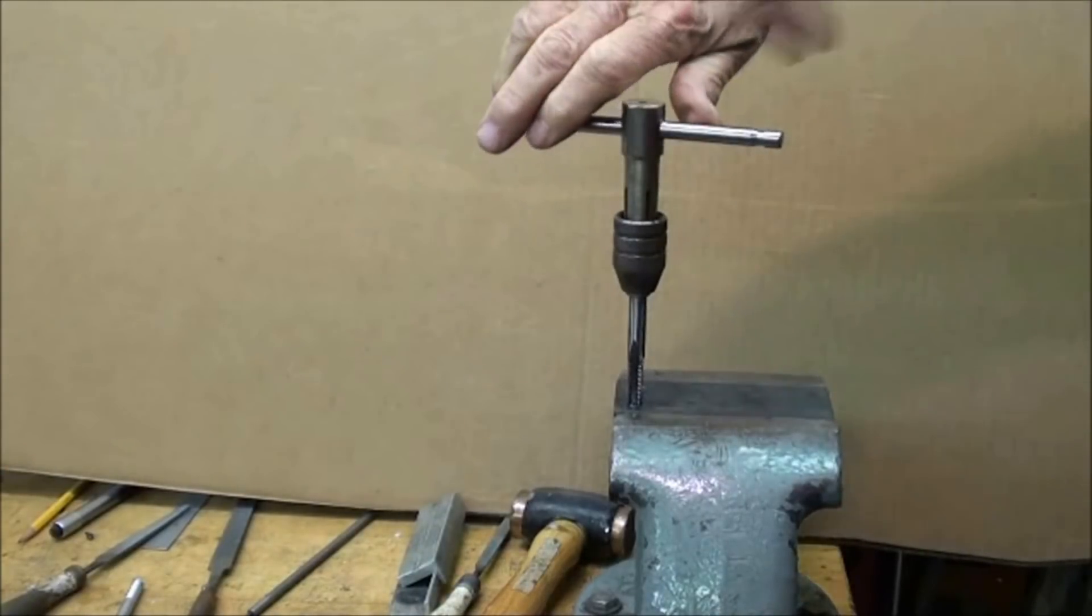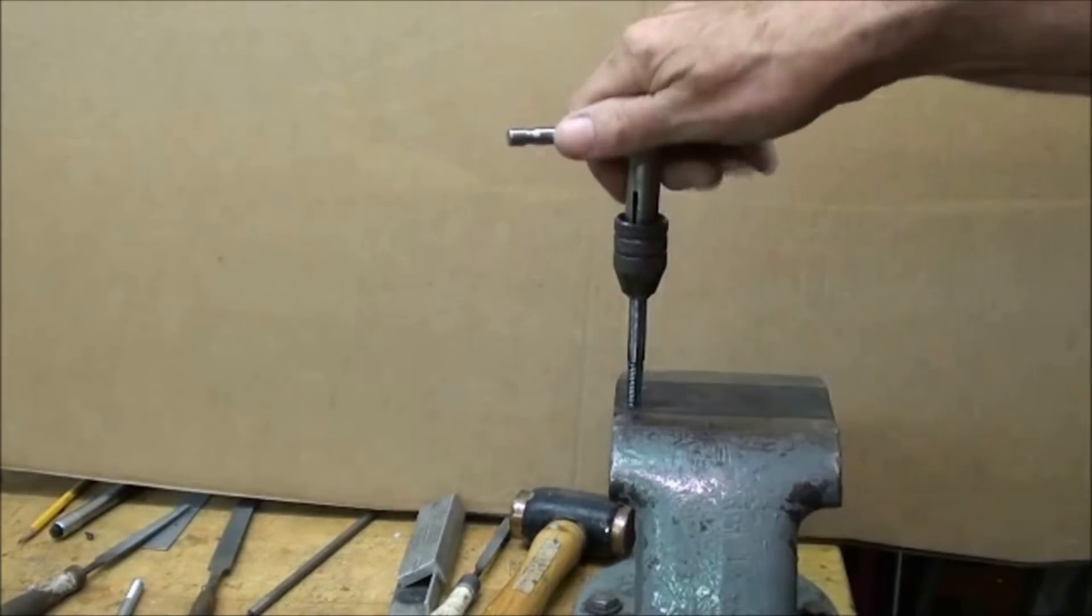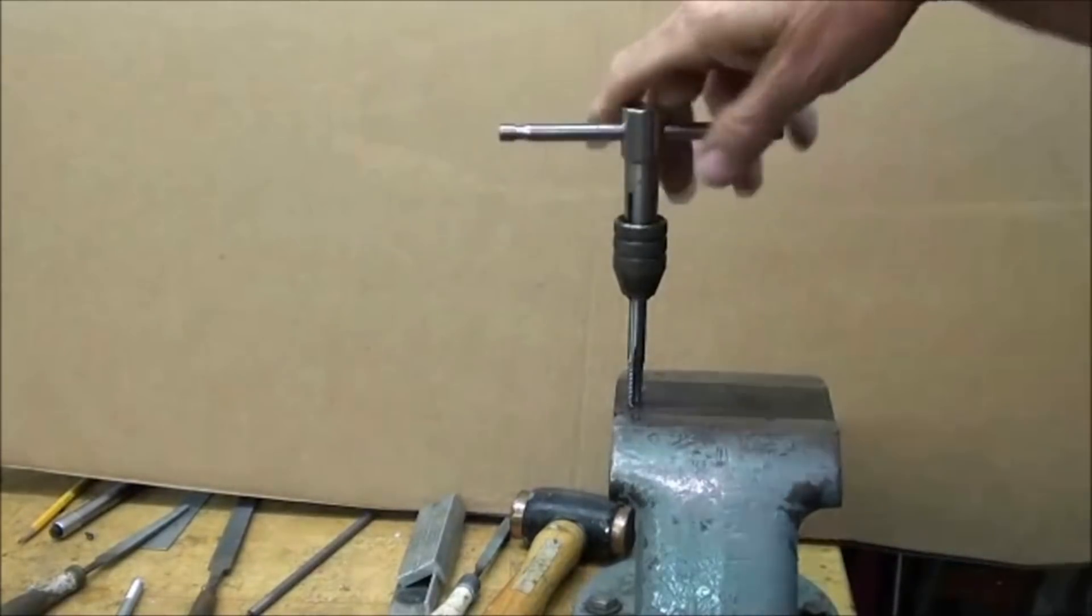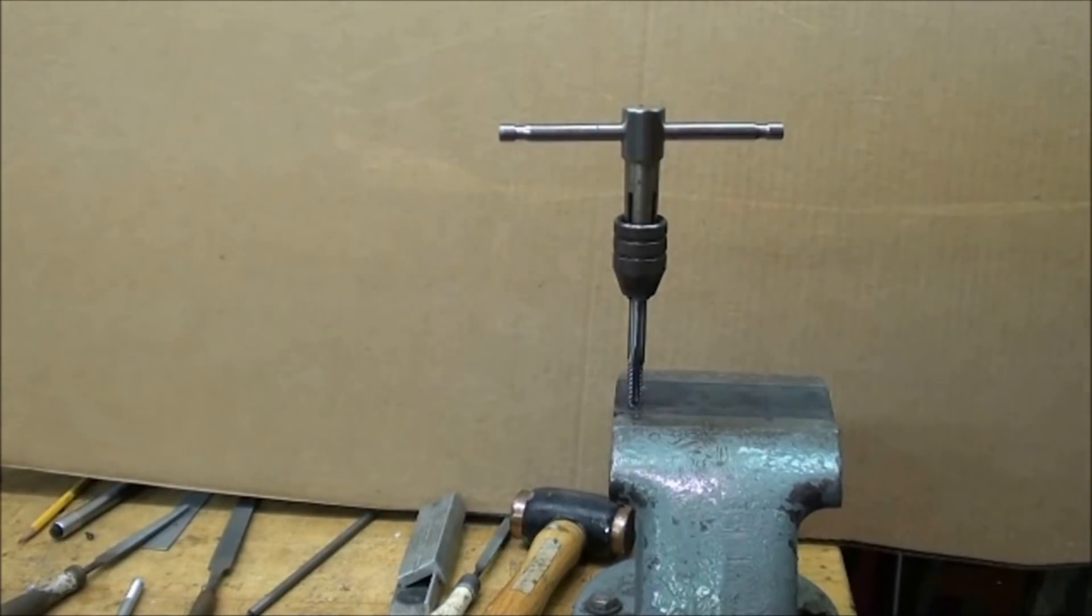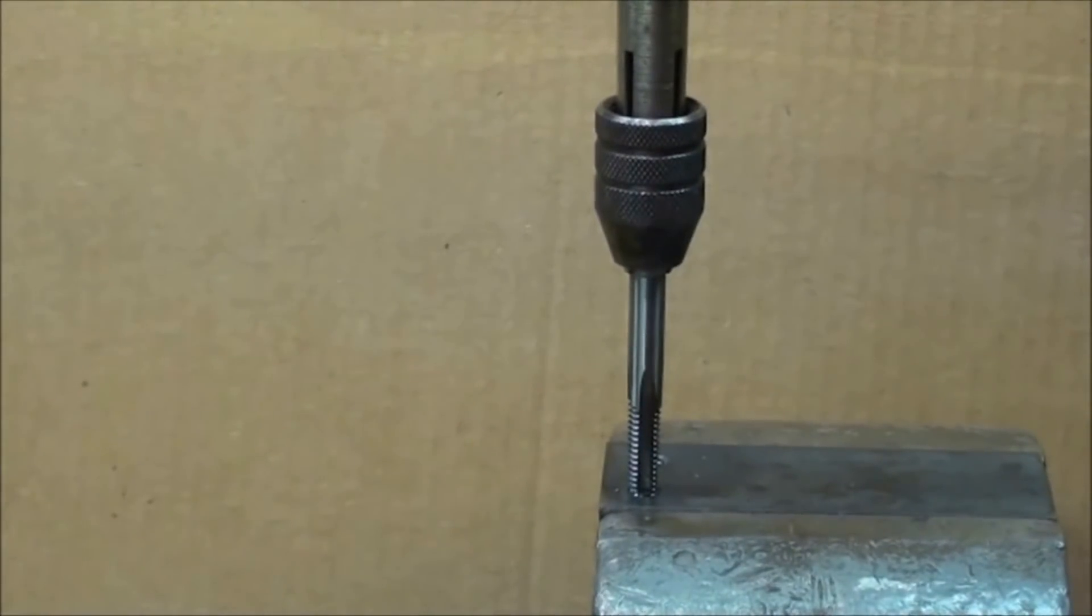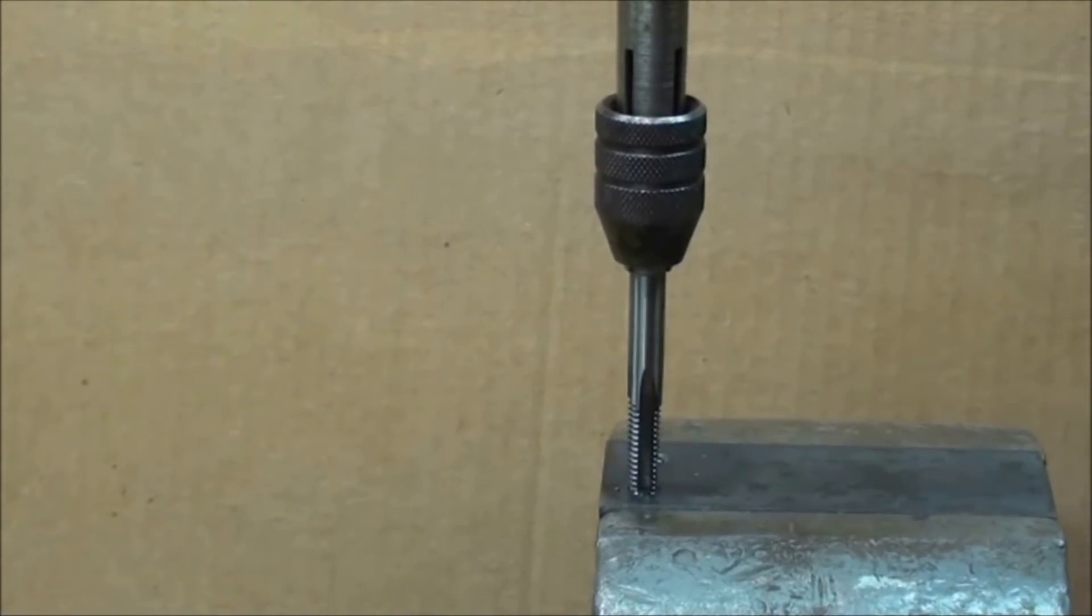Always turn about one turn and then back it off. This is hot rolled steel, so it's kind of tough steel. And then continue tapping all the way through until you go past the tapered teeth. That's the sighting method.